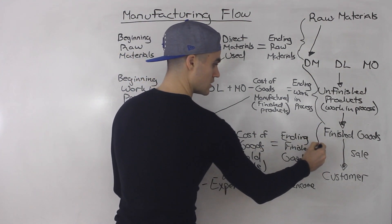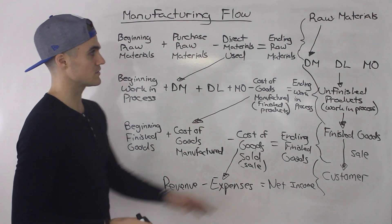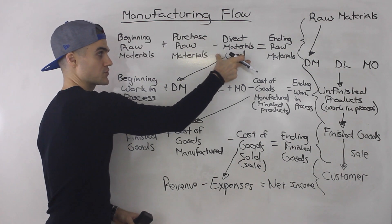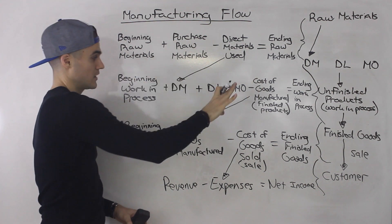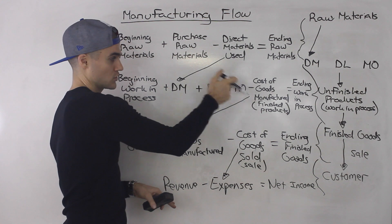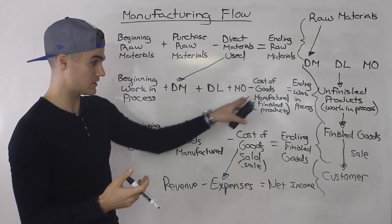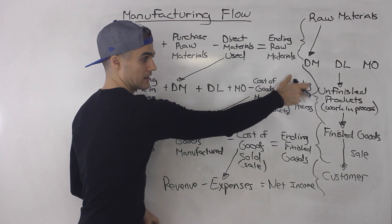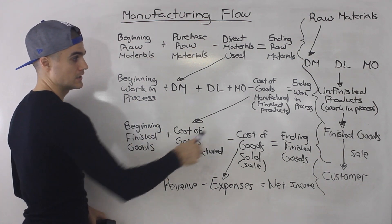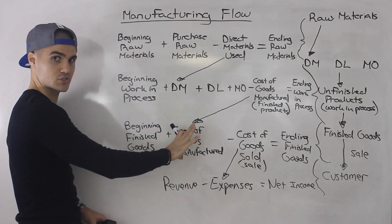That goes into expenses, and then you have the sale to the customer. So that's how you take this flow chart and go into more detail. You start with raw materials; from raw materials you get direct materials that go into production. The whole production flow has beginning work in process, direct materials going in, direct labor, manufacturing overhead — some products finish and leave the factory as cost of goods manufactured, and you end up with ending work in process.